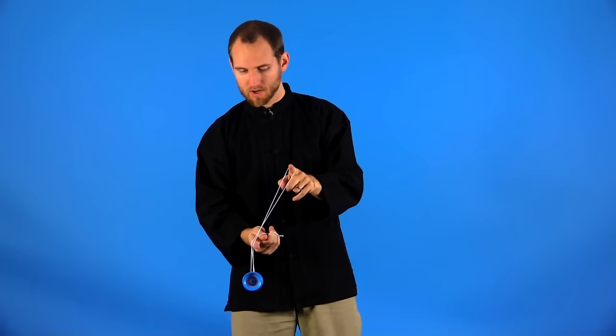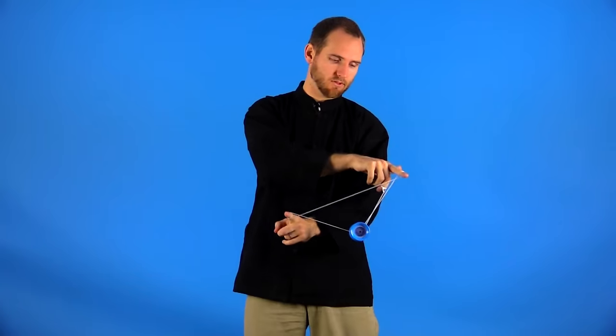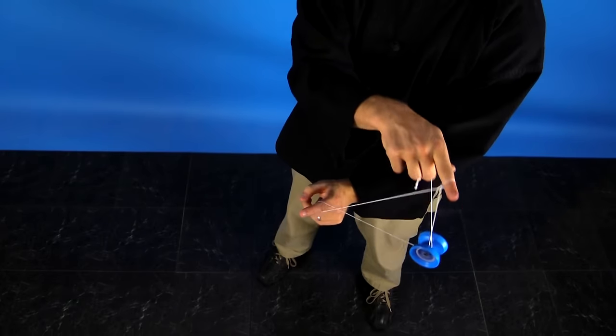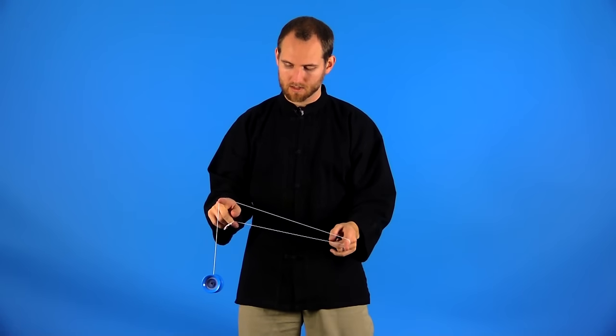From here, what you're going to do is you're going to swap your hands by swinging your throw hand on top, and then you're just going to bring your throw hand to the side and dump the yoyo out. You're kind of right back where you started before you got into a one and a half mount.